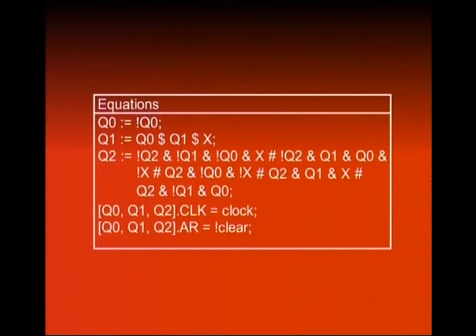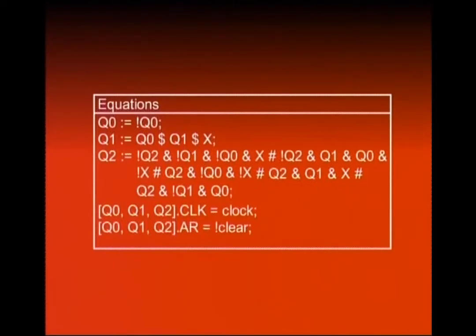Pehli equation: Q0 ko assign kiya hai Q0 bar. Jo boolean expressions humne derive ki thi D0 ke liye, D1 ke liye, D2 ke liye — unhe exactly ABEL expressions mein likh rahe hain. Q1 ko assign kiya hai Q0 dollar Q1 dollar X — dollar represent karta hai exclusive-OR operation. Q2 variable ko assign ki hai woh boolean expression jo D2 ke liye derive ki thi. Do aur statements hain: Q0, Q1, Q2 dot clock = clock — yeh represent karta hai ke yeh clocked flip-flops hain. Aur Q0, Q1, Q2 dot AR = !clear — AR represent karta hai asynchronous reset.